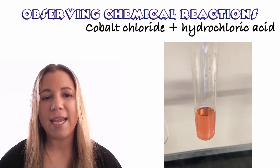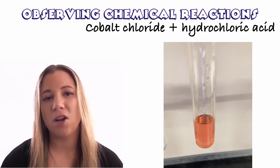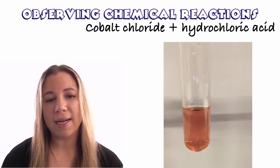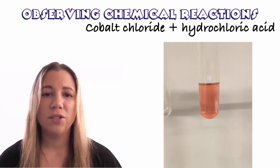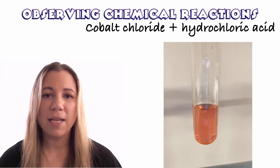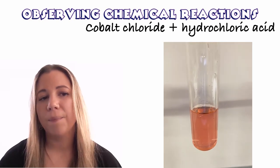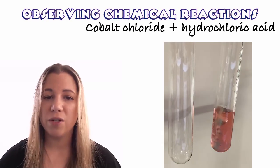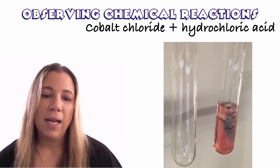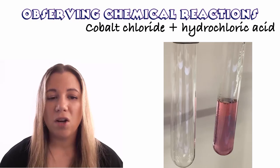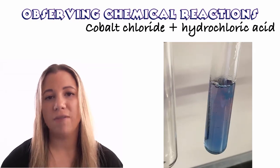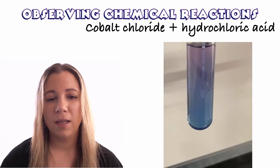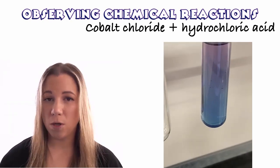The next experiment is the reaction of cobalt chloride and hydrochloric acid. Here is the cobalt chloride solution before we react it — make some observations about the color and whether it's transparent or opaque. Now I'm going to add some concentrated hydrochloric acid. Here it is after reacting — the cobalt chloride and hydrochloric acid have reacted together — and now I'm going to add some water.